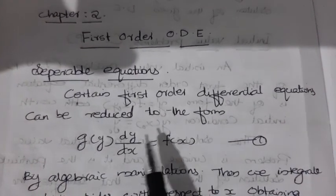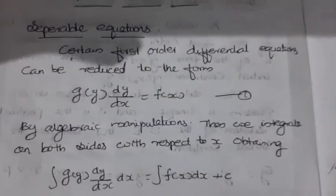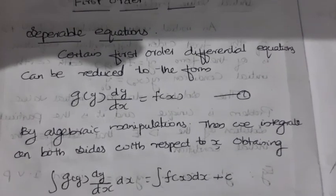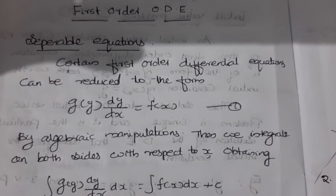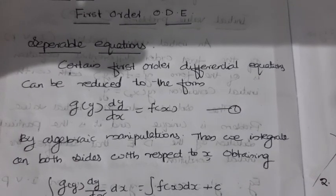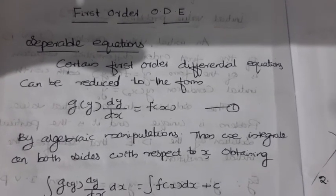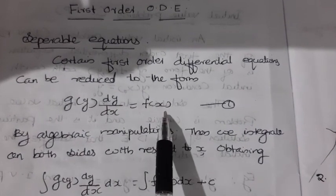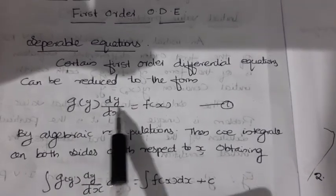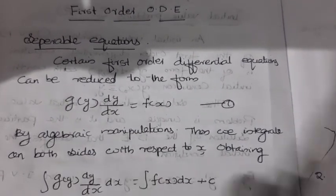Separable equations: certain first-order differential equations can be reduced to the form g(y) · dy/dx = f(x). Separable equation means we separate the variables x and y — the terms involving x appear on one side and the terms involving y appear on the other side. That is, g(y) · dy = f(x) · dx.